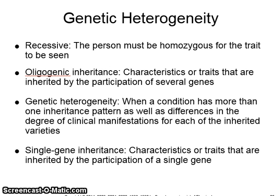Genetic heterogeneity. Recessive means that the person must be homozygous for the trait in order for the trait to be seen or expressed physically. Oligogenic inheritance means that the characteristics or traits are inherited by the participation of several genes — in other words, it takes several different genes to cause that characteristic to be seen. Genetic heterogeneity is when a condition has more than one inheritance pattern, as well as differences in the degree of clinical manifestations for each of the inherited varieties. A single gene inheritance is a characteristic or trait that is inherited by the participation of a single gene.